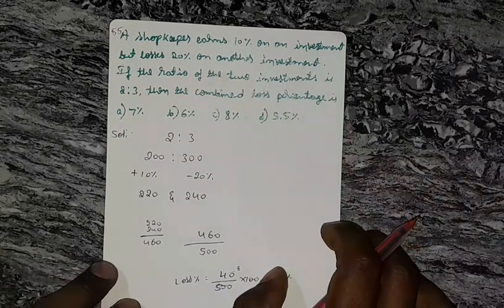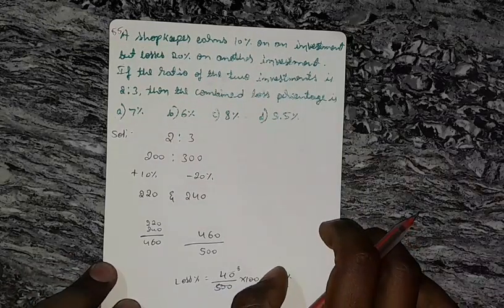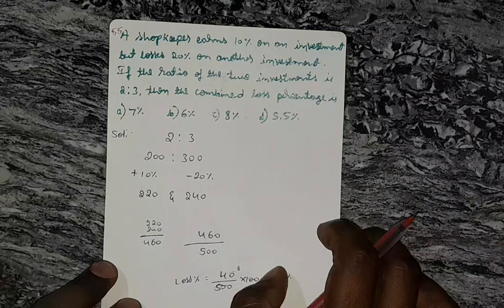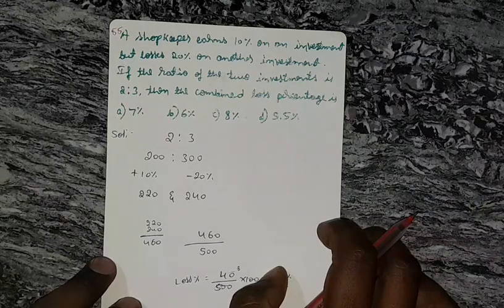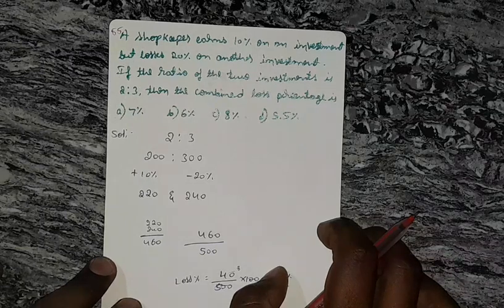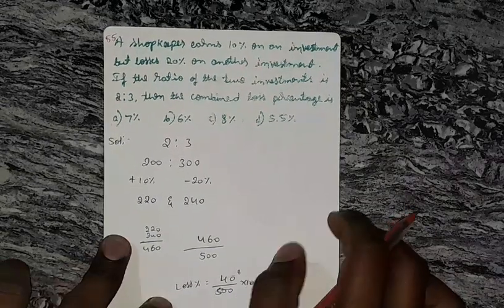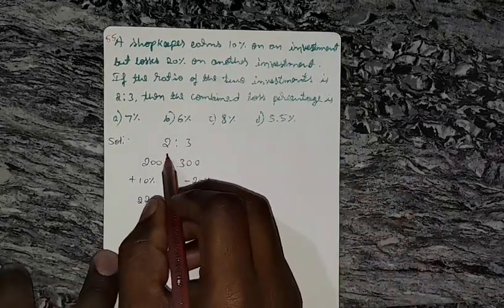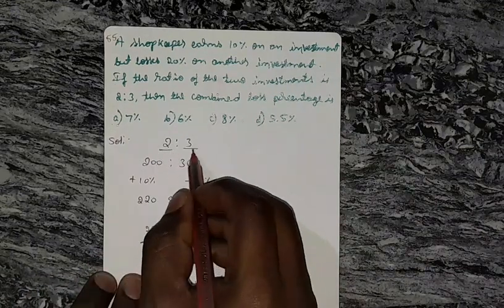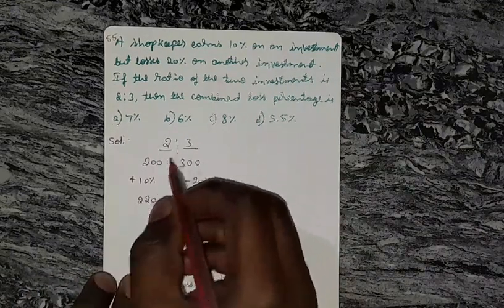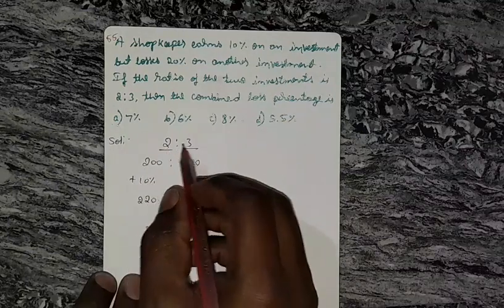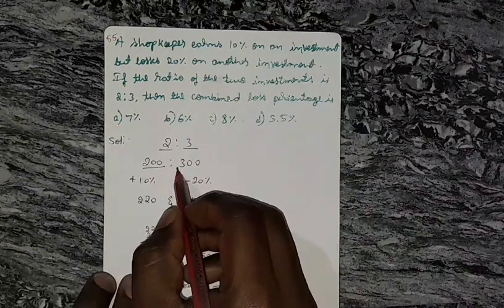A shopkeeper earns 10% on an investment but loses 20% on another investment. If the ratio of the two investments is 2 is to 3, then the combined loss percentage is? The ratio of their investment is 2 is to 3. For better calculation, I am taking 2 is to 3 as 200 and 300.